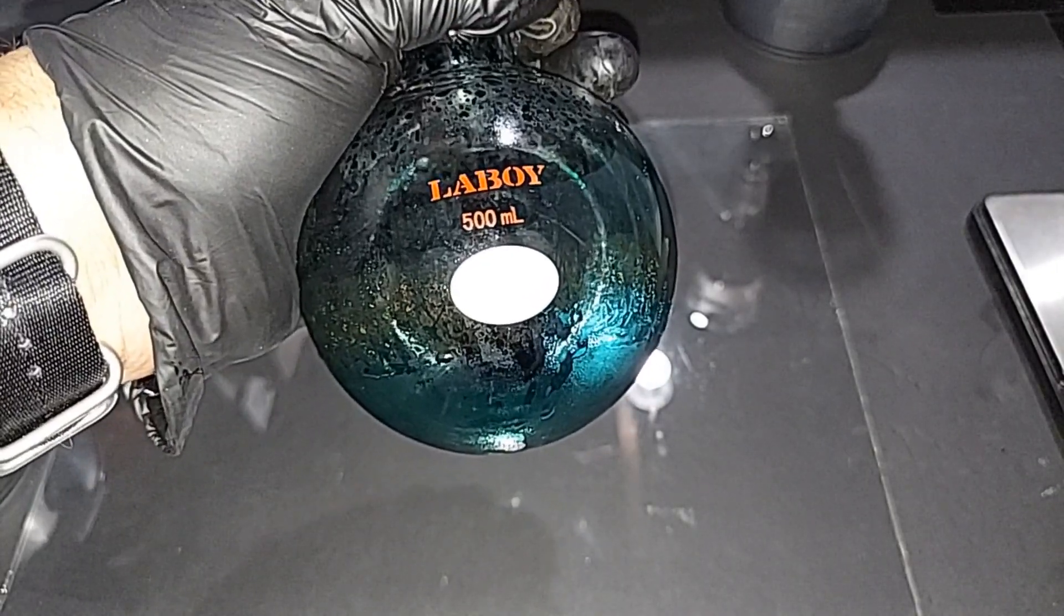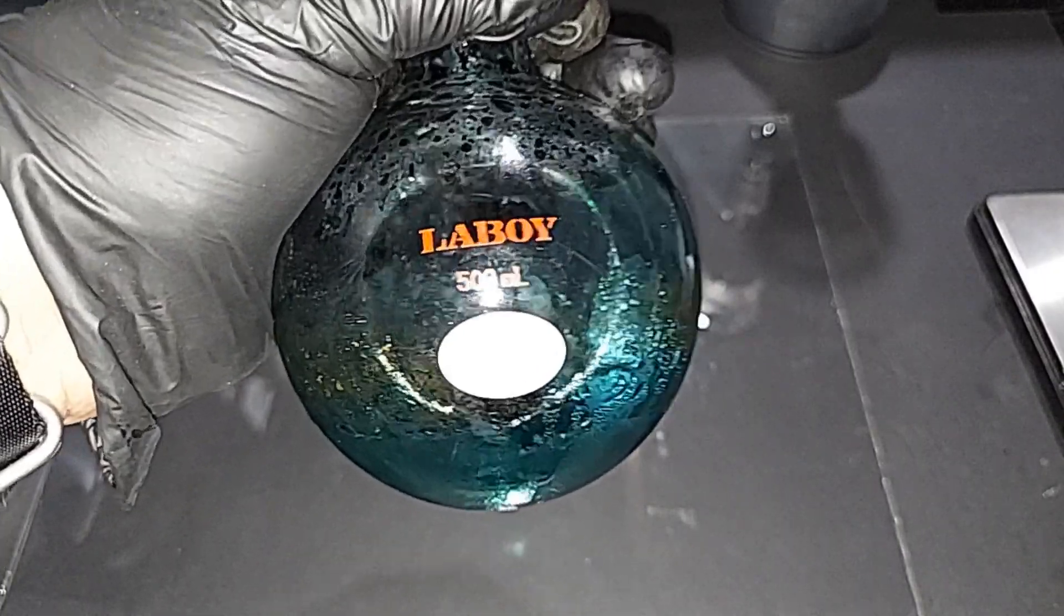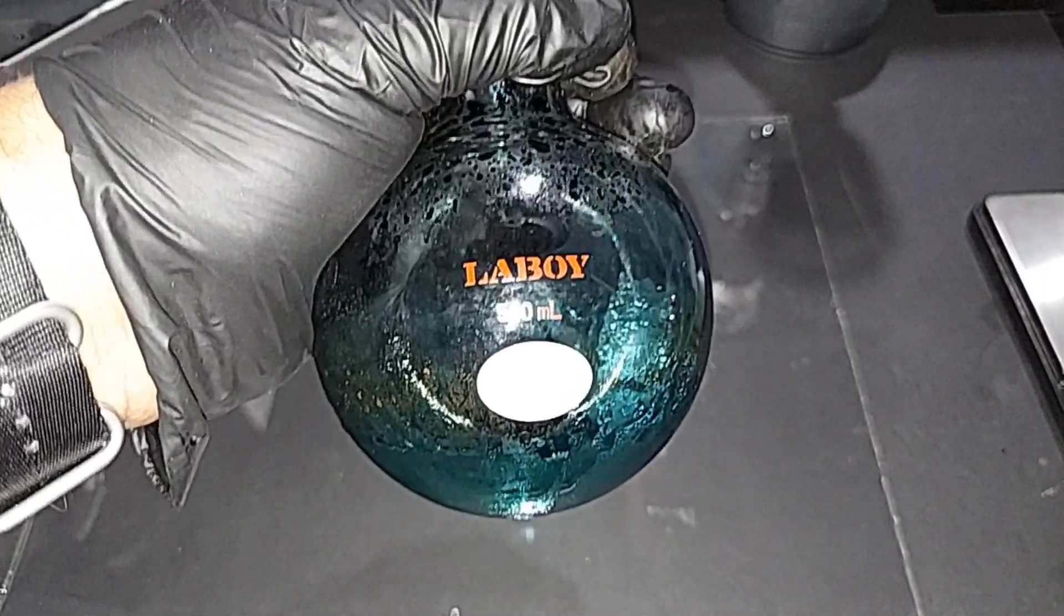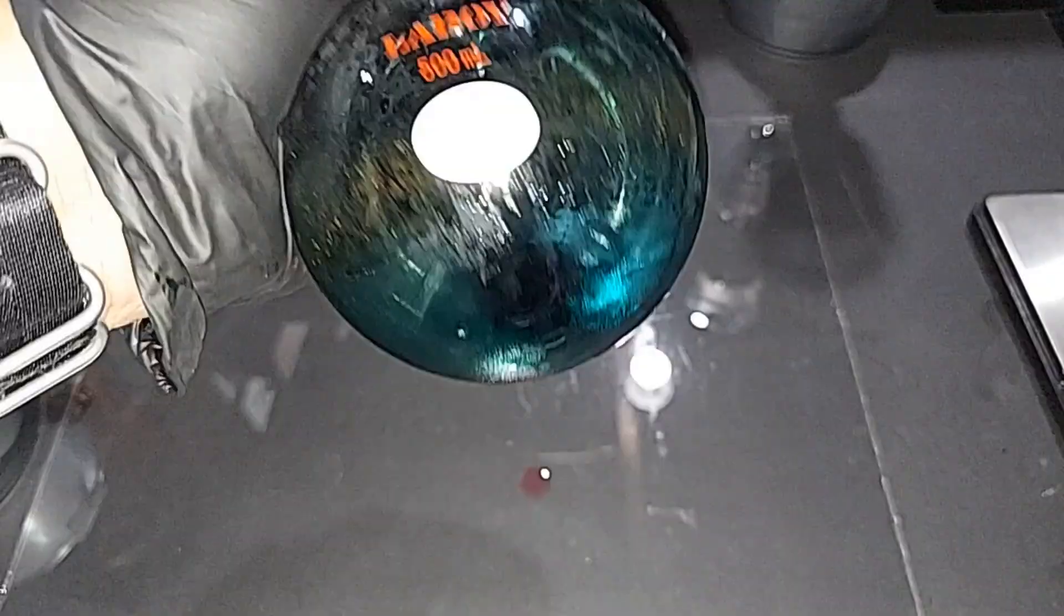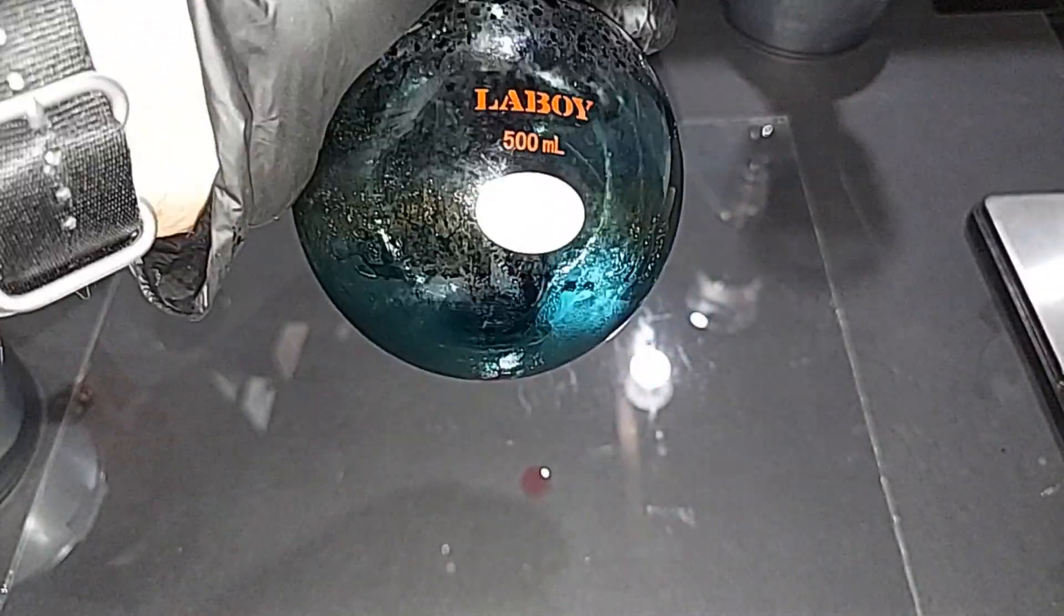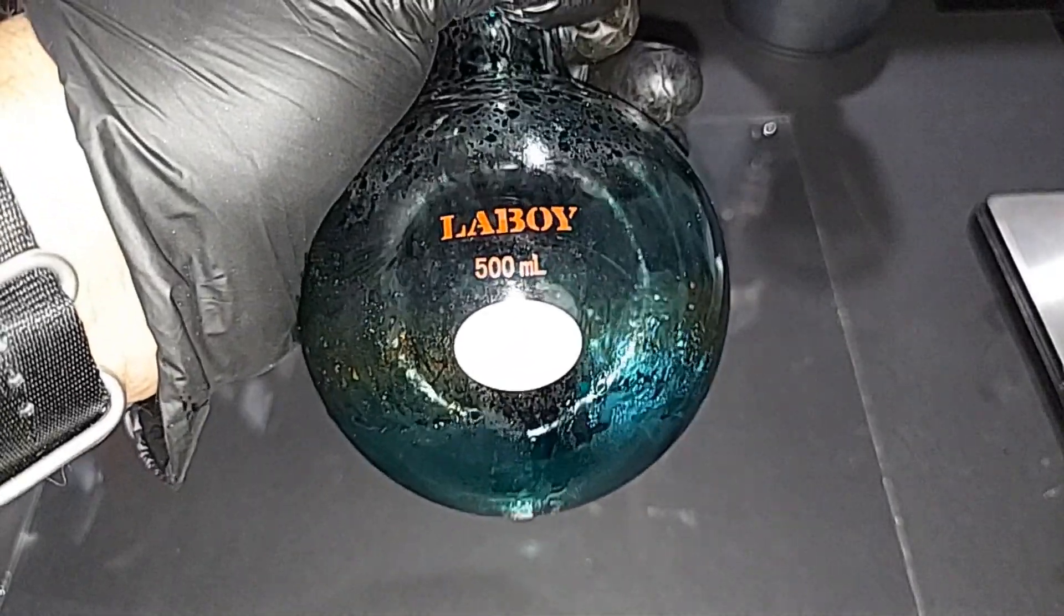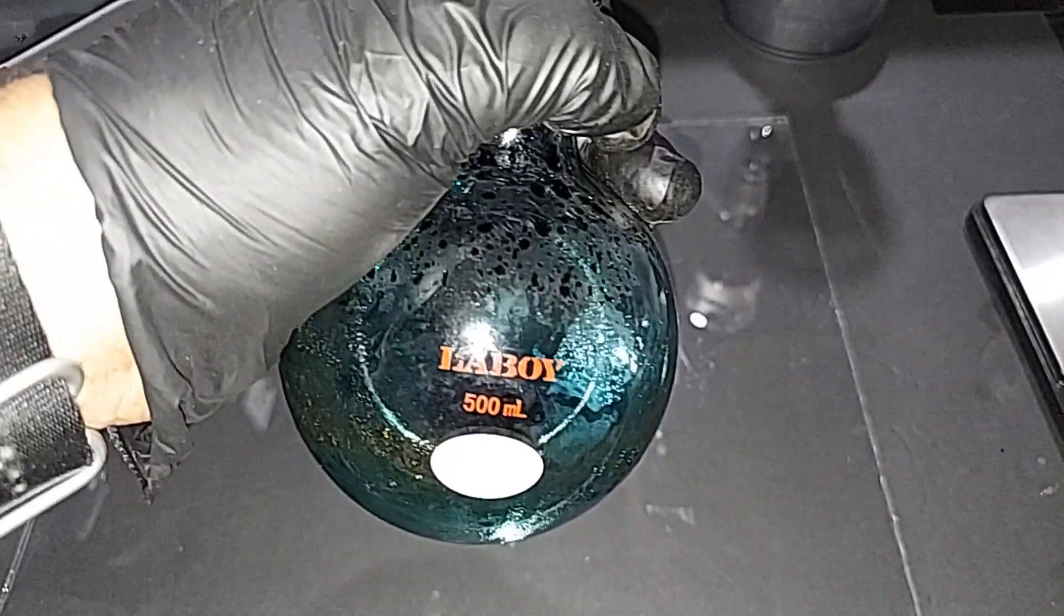When we just filtered the solution out of the freezer, this is what I used, this round-bottom flask, to collect the filtrate. I just wanted to show you how green it is, just once again to show that the manganate goes through the filter while the potassium permanganate comes out of solution first.